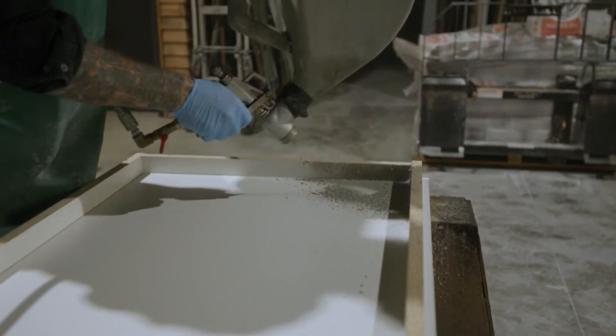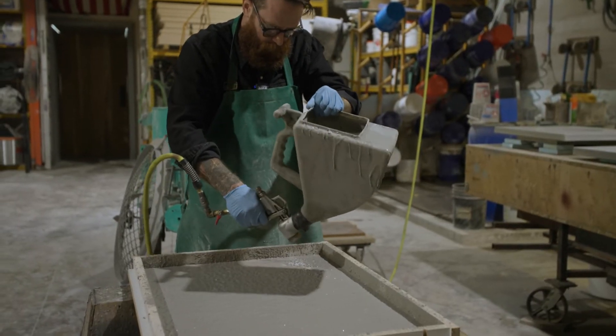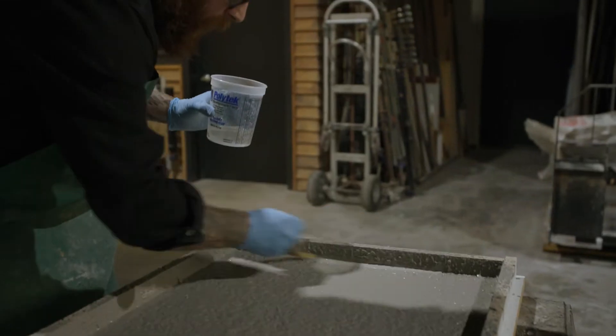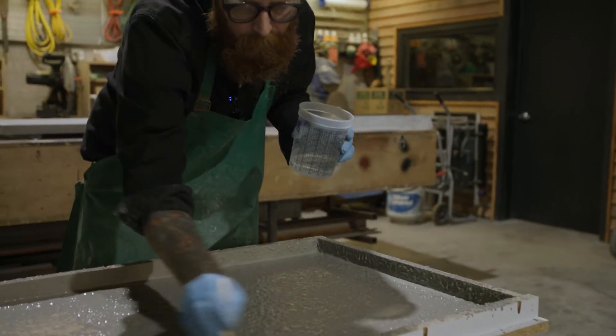Spray the mix into the form, starting in the corners and working backwards. Brush the corners with a wet brush to remove any air pockets, then spray another quick coat.